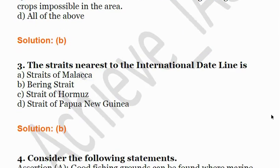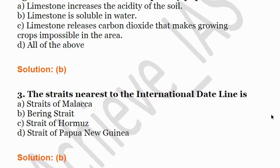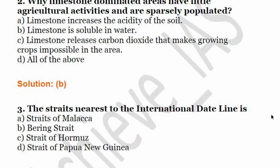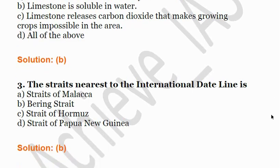The third question is: the strait nearest to the international date line is — A: Strait of Malacca, B: Bering Strait, C: Strait of Hormuz, D: Strait of Papua New Guinea. The correct answer is B, Bering Strait. The nearest strait to the international date line is Bering Strait, which joins the Arctic Sea with the Pacific Ocean and separates the Russian landmass from the American landmass.